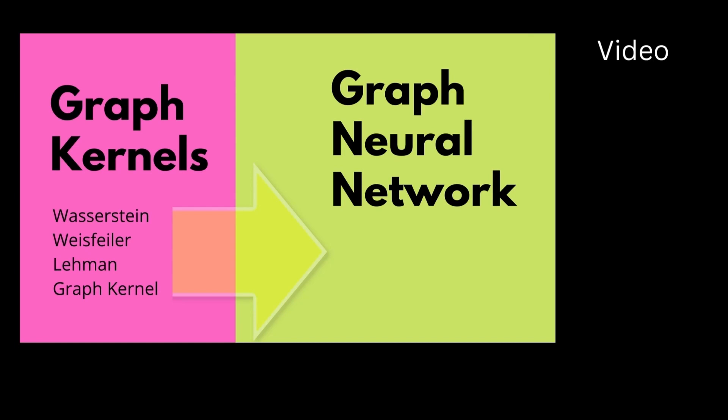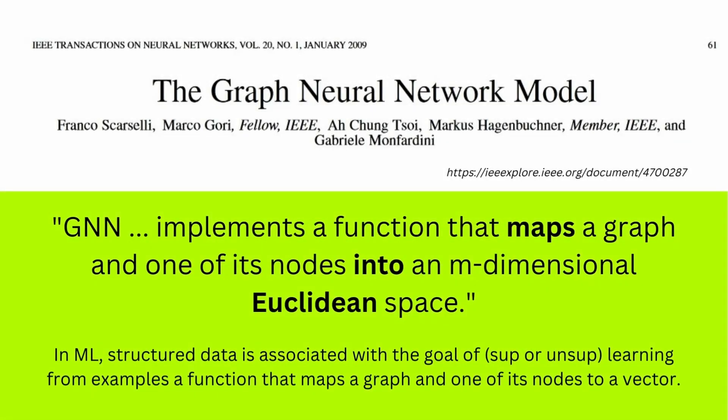Welcome back to the presentation. If you want to know about graph neural networks, I have another video coming from graph kernels, Wasserstein distance, and Weisfeiler-Lehman tests, where you can see the transition from graph kernels to graph neural networks. But maybe the first publication I found on graph neural networks is an IEEE paper from January 2009. And even there, it implements a function that maps a graph and its nodes into a lower-dimensional Euclidean space.